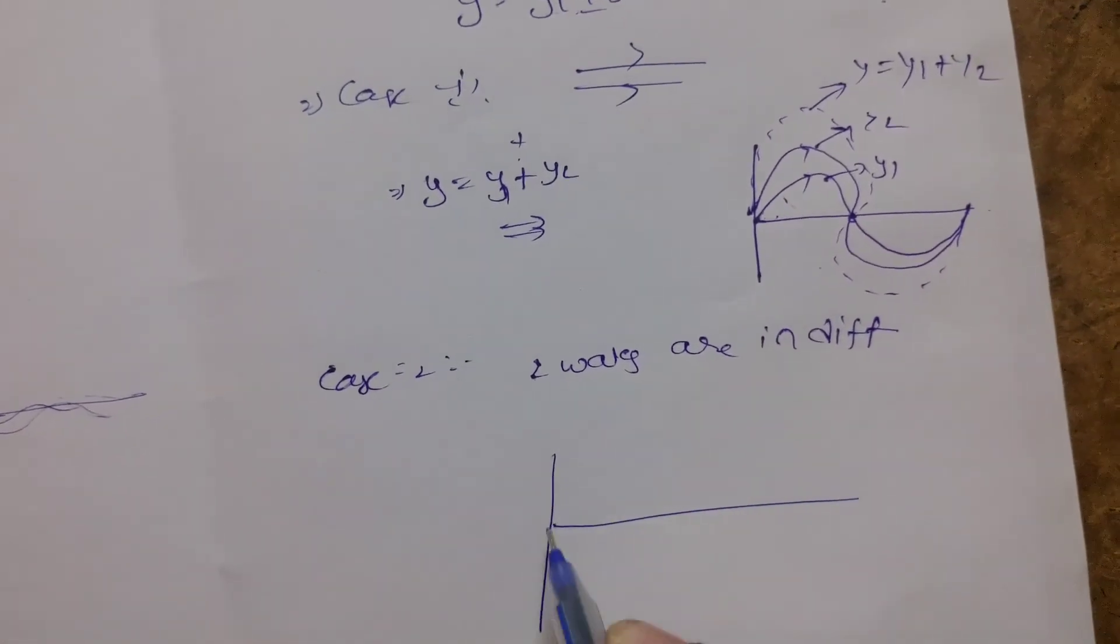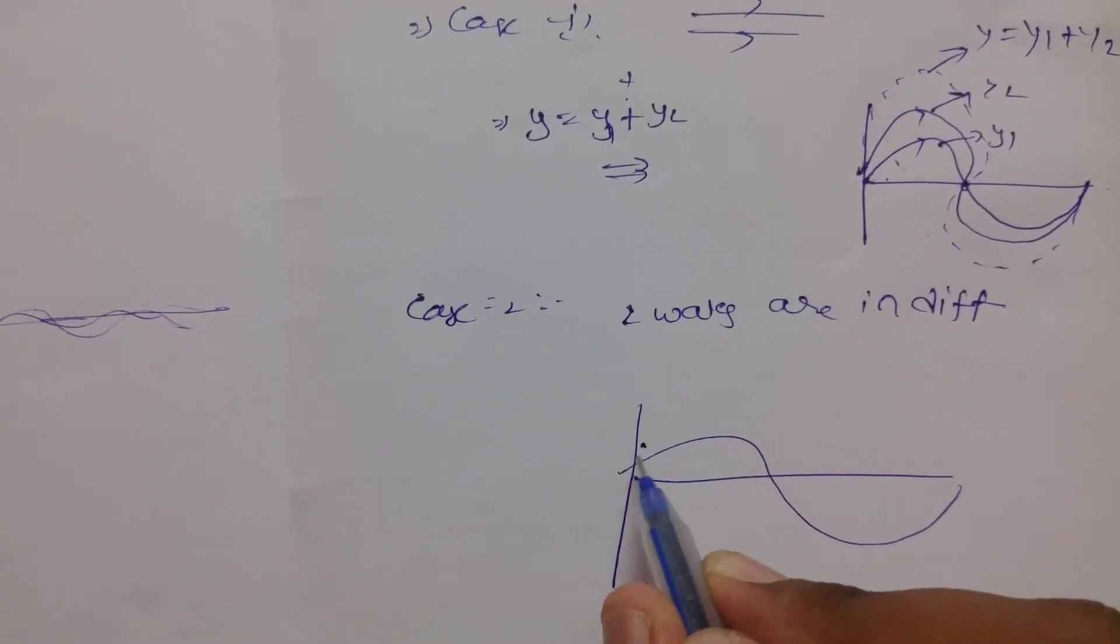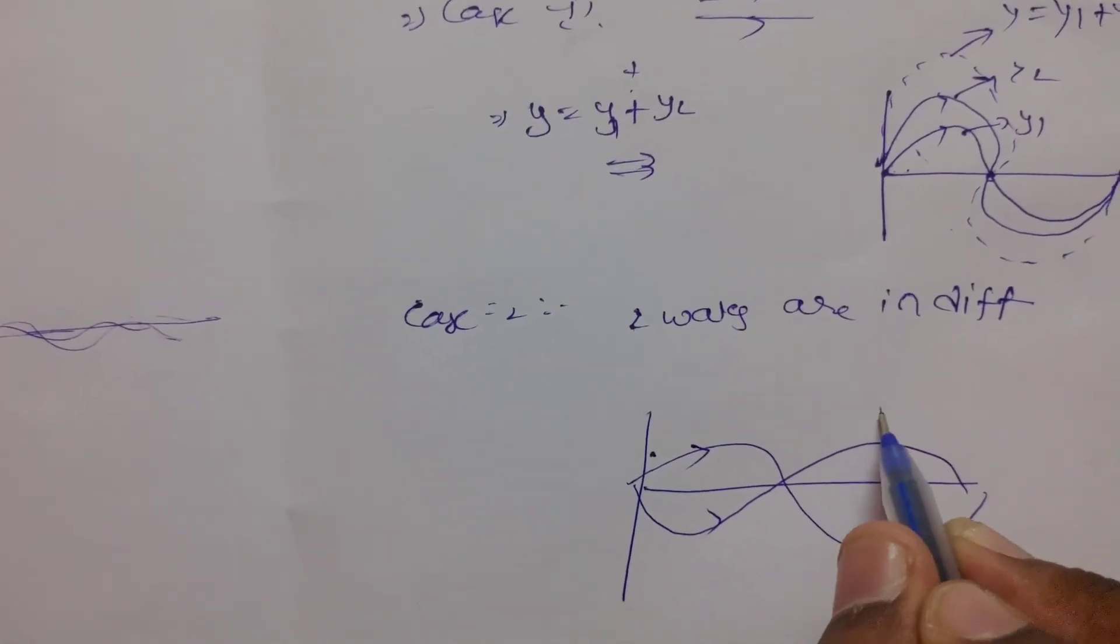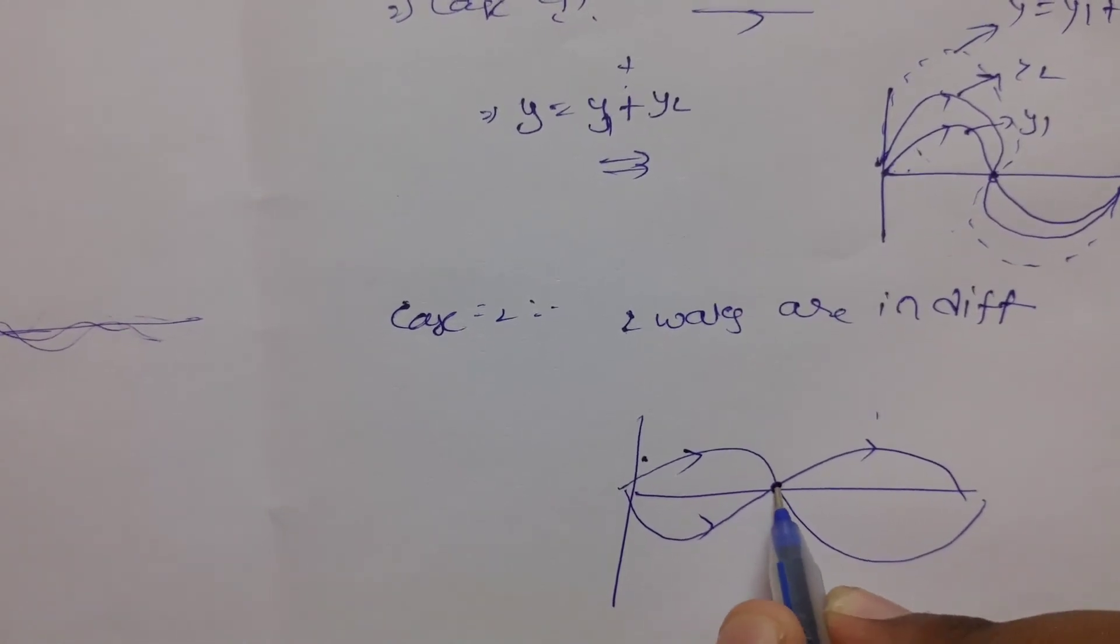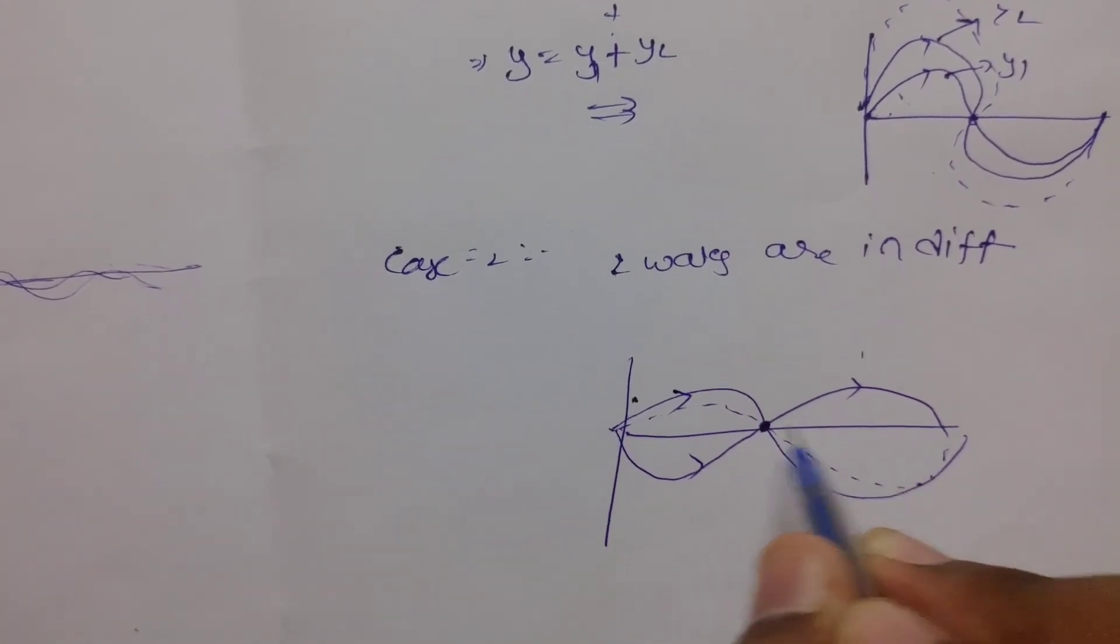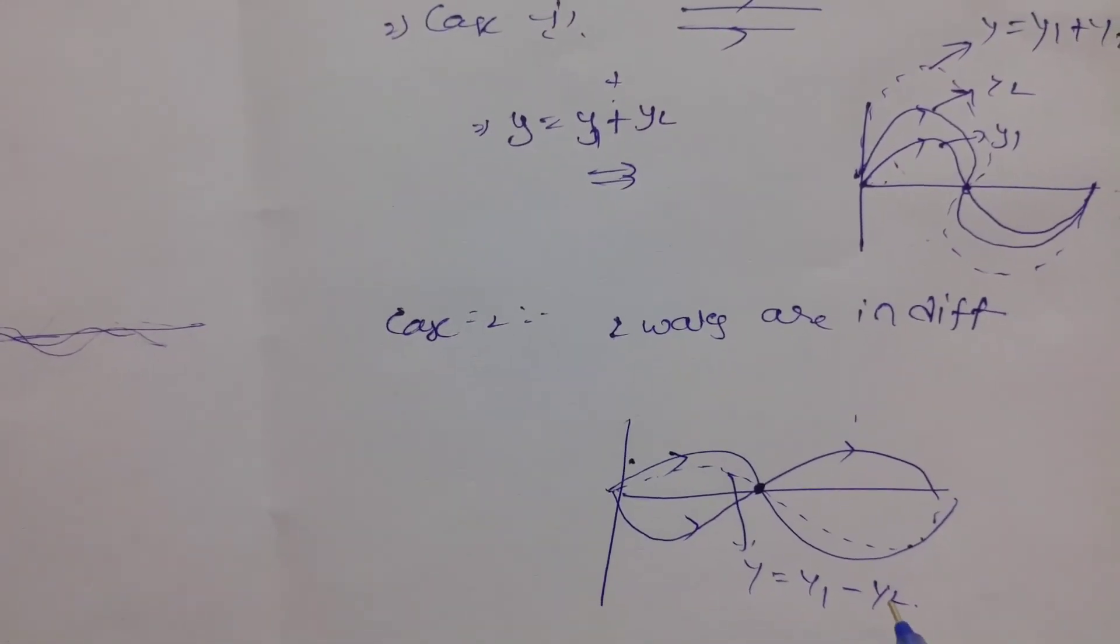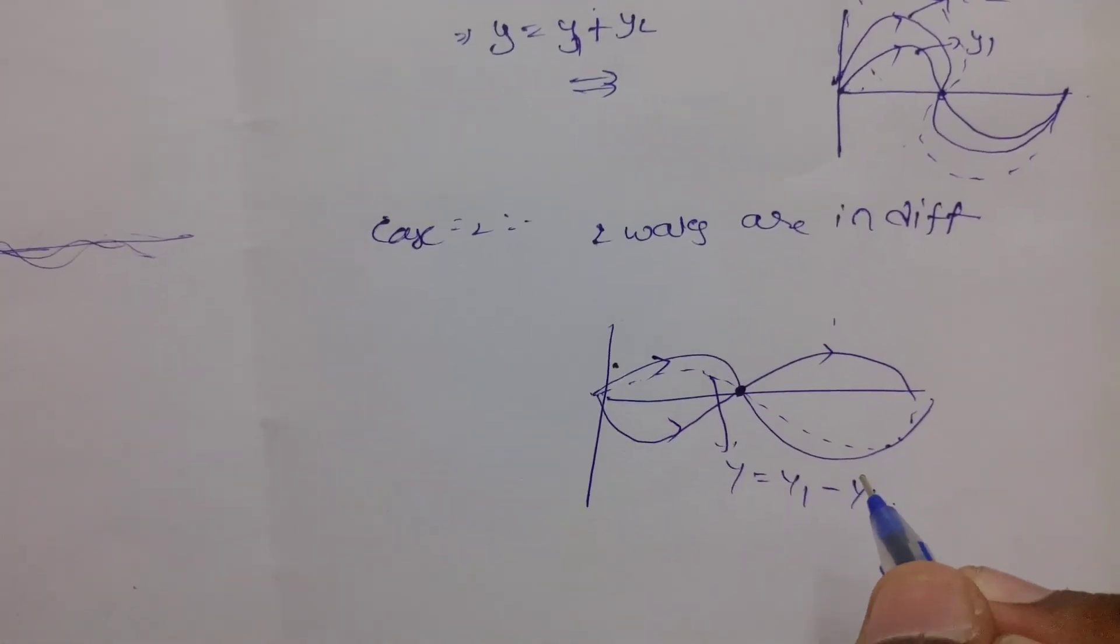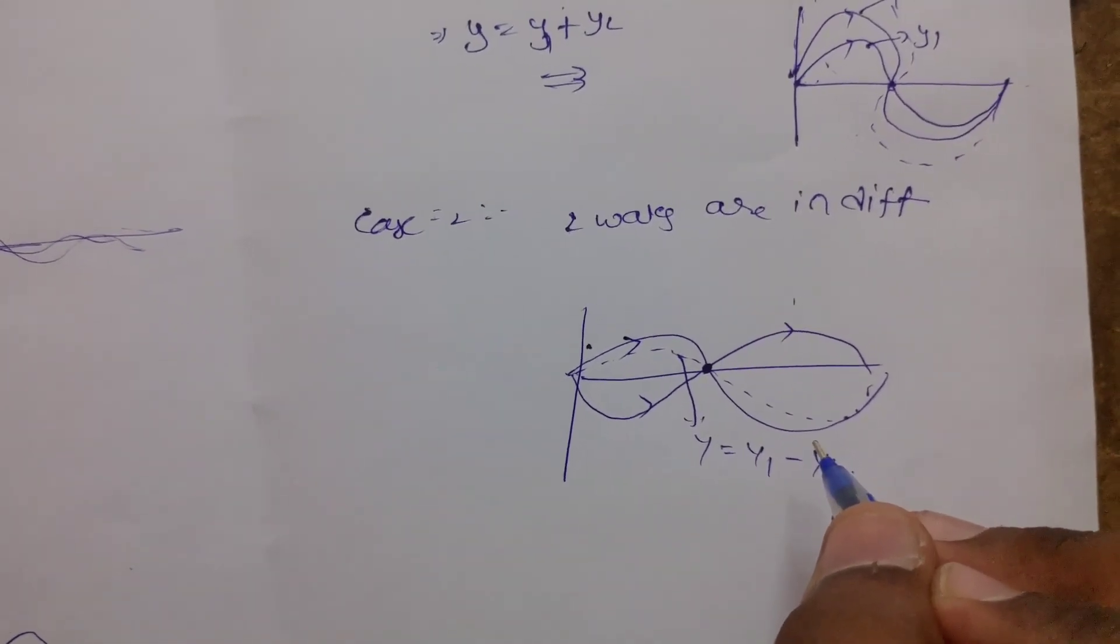The diagram shows two waves traveling in two different directions. When waves travel in opposite directions and impose at a point, since they have counter directions with different magnitudes, the resultant wave is y equals y1 minus y2.